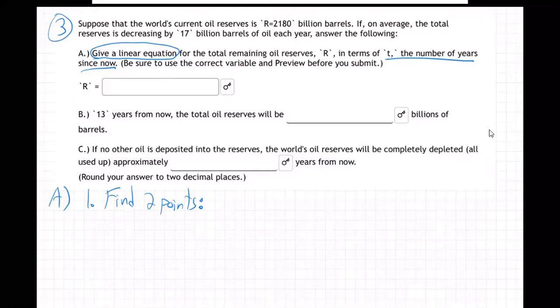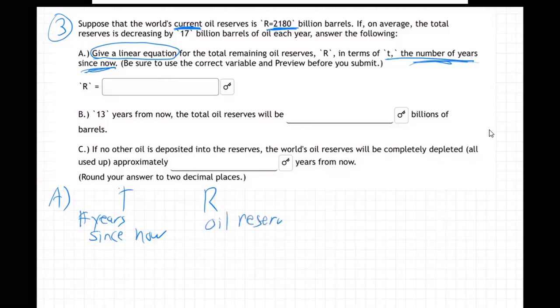Well, oh no, my mistake. I mean, we are finding a linear equation, but we don't need to find two points. They're giving us a bunch of information. They're telling us that the oil reserves is 2180 currently. So that's your starting point. That's right. 2180 is the current oil reserve. So that's telling us. So remember what our two variables are. T and R. T is what? Right here. Number of years since now. T is number of years since now. And R is the oil reserves.